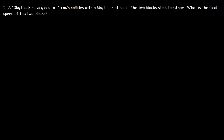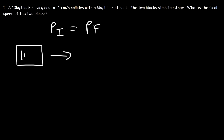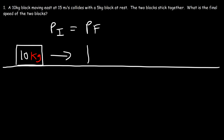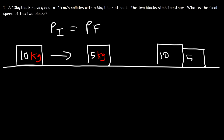Whether it's an inelastic or elastic collision, it doesn't matter. For any collision, we can use this equation: the total momentum before equals the total momentum after the collision. Now let's draw a picture. We have a 10 kg block moving east, and it's going to strike a 5 kg block currently at rest. After the two collide, these two blocks will stick together. Our goal is to calculate their final speed.